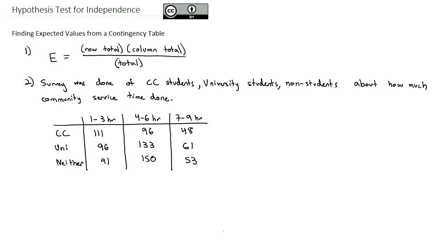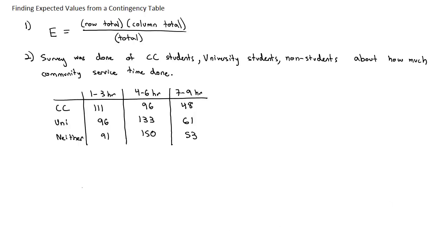And if we were testing the number of hours that students did in community service compared to their category, and we want to know if those two were independent or if there seemed to be some relationship, we would need to calculate the expected values. To get the expected values, we first need to know the totals for each row and column.